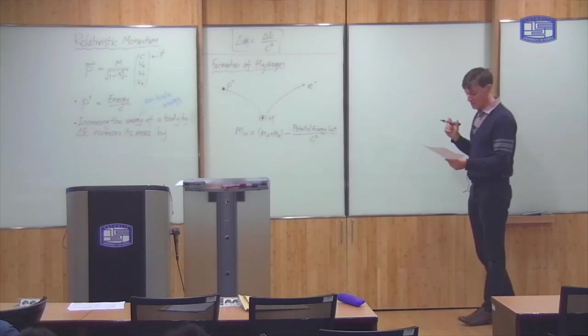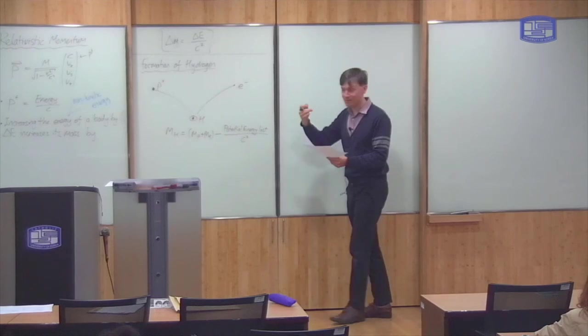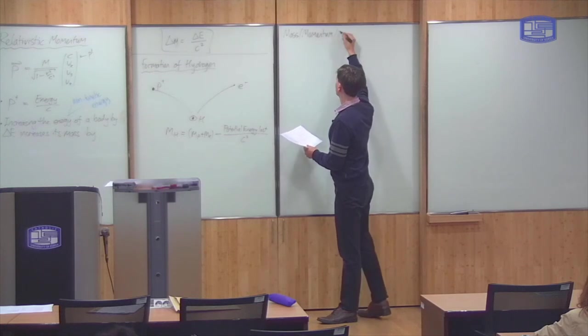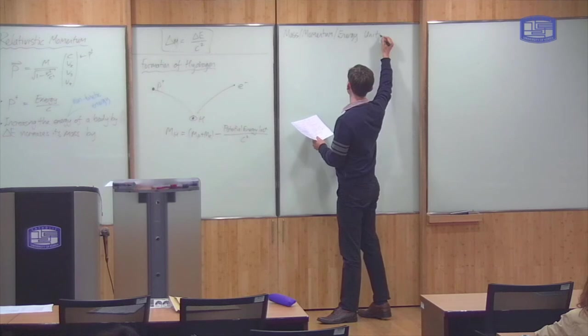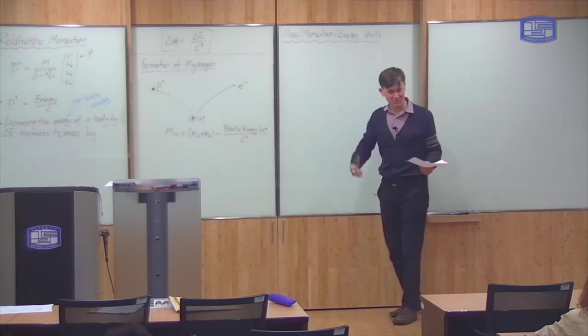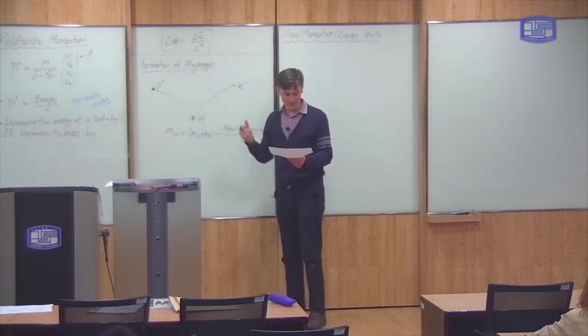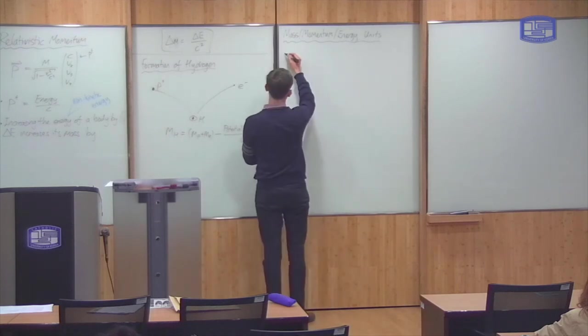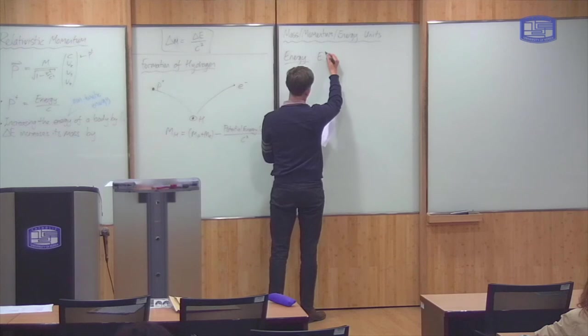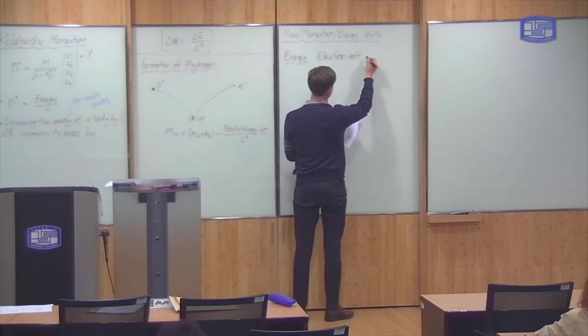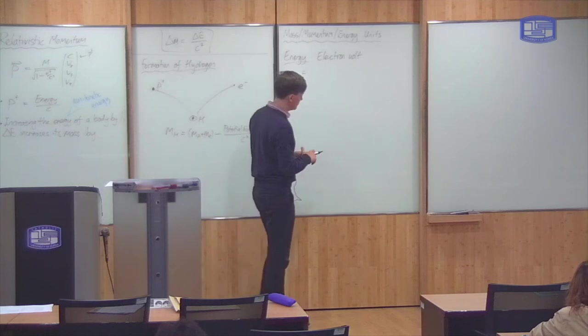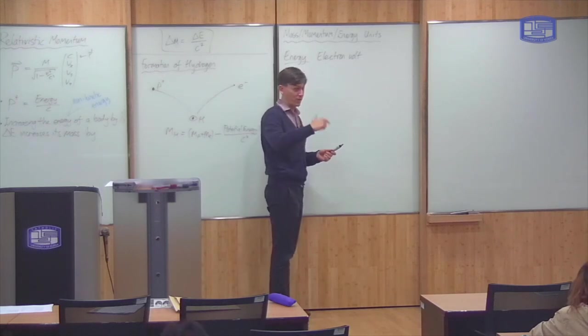Before I give you the data, I want to explain some units, which are common. These are units which are commonly used in particle physics, when you're talking about subatomic particles like this. The first is the unit of energy, which is the electron volt. The electron volt, as the name suggests, this is the amount of energy that an electron gains if it crosses an electrical potential of one volt.